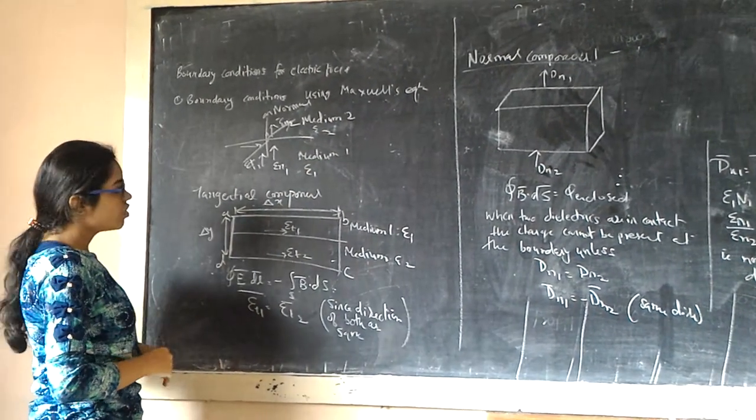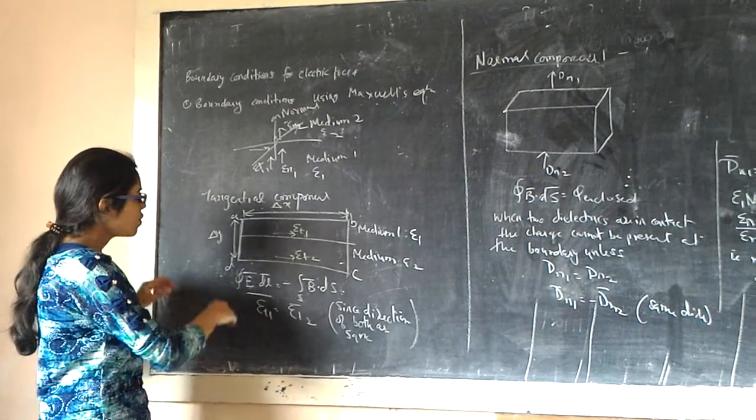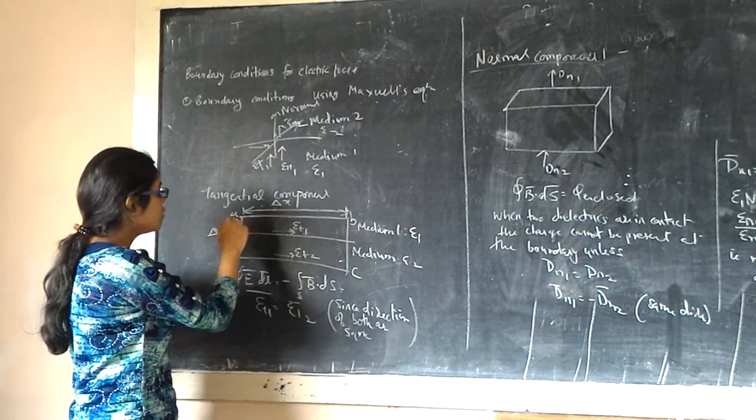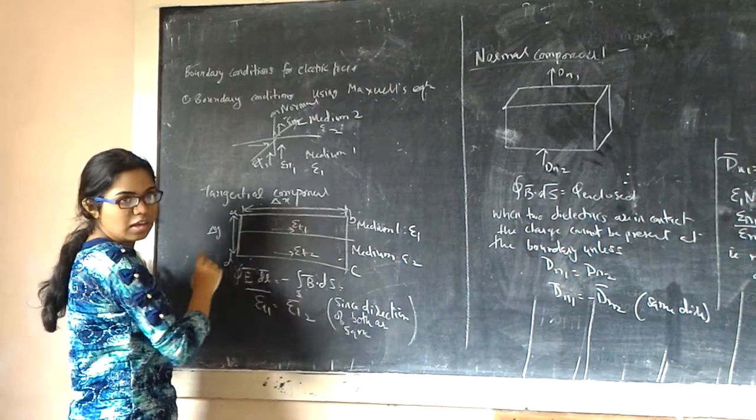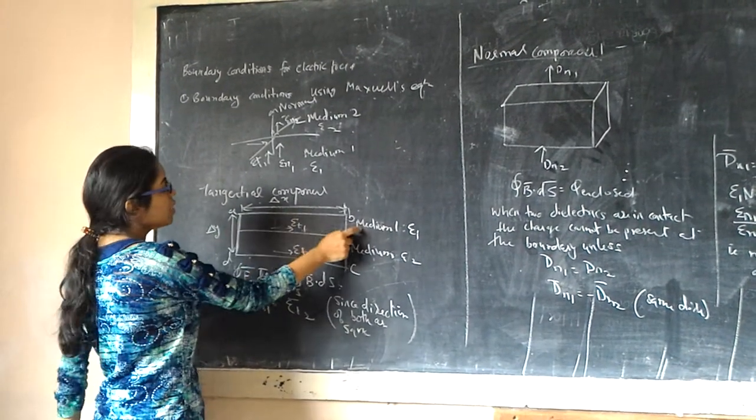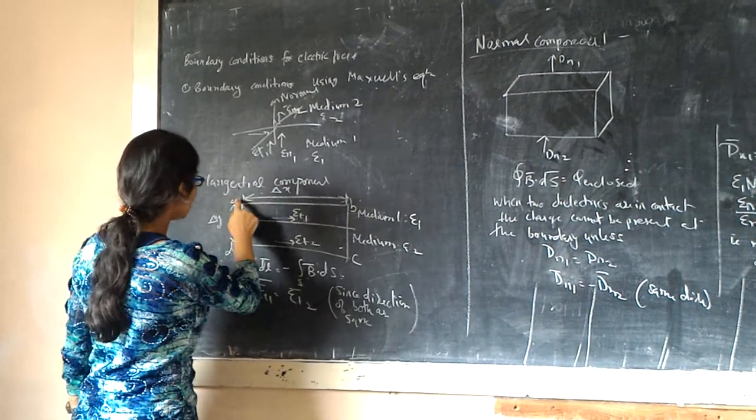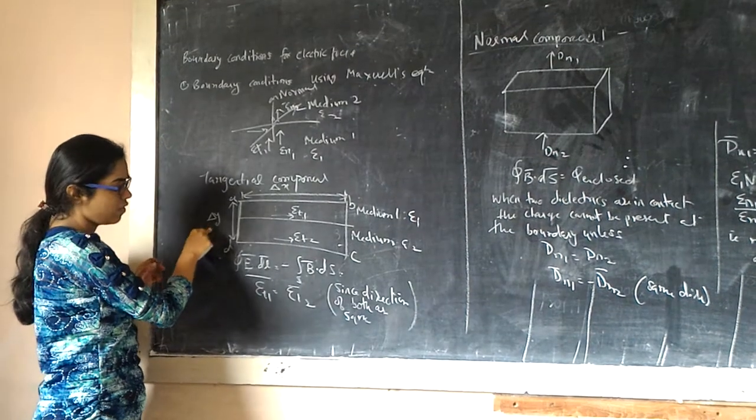Second problem is the tangent component. In the diagram, there is a closed loop in which A, B, C, D are the points. The distance between A and B is given by del X. The distance between B and C is given by del Y.